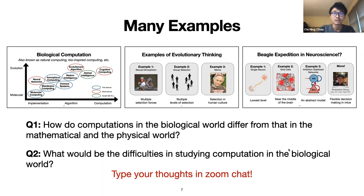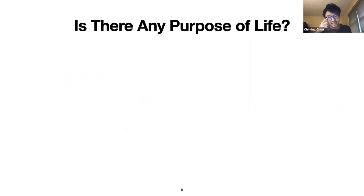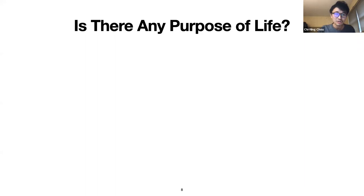What I'm going to talk about now is inspired by some discussion in yesterday's guest lecture by Zichen on art and computation. At some point, someone suddenly asked: is there a purpose of life? To attempt to answer these questions, I want to give some clarification and introduce some common biological terms. In the study of biology, there are two related notions along this line of asking the purpose of life: proximate causes and ultimate causes.